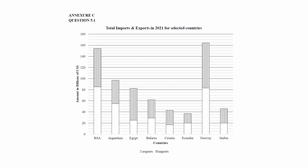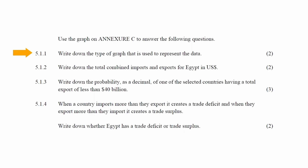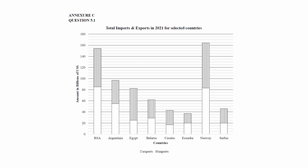In Question 5.1.1, you have to write down the type of graph that is used to represent the data. The type of graph used to represent the data is called a stacked bar graph.